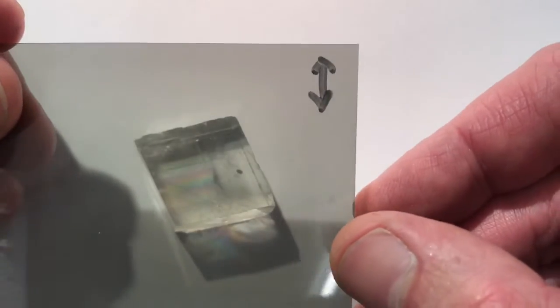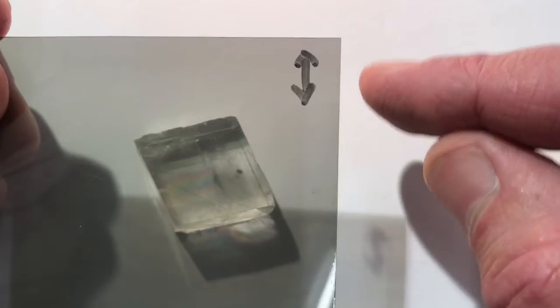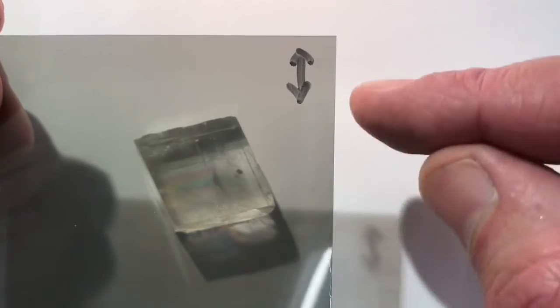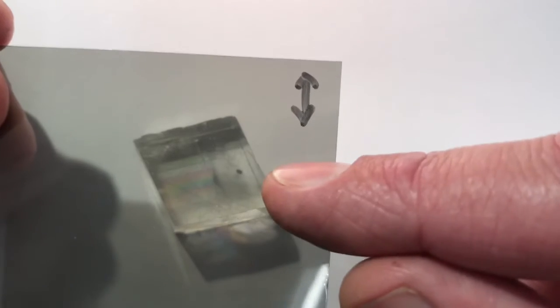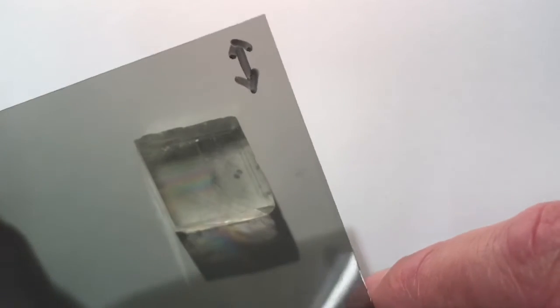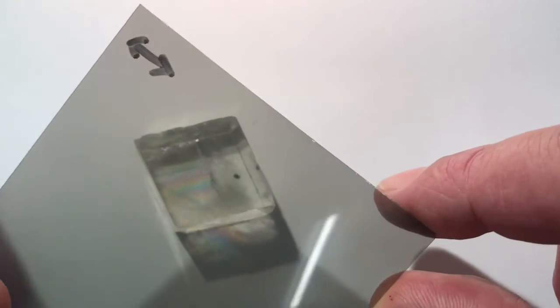So that tells me there's a linearly polarized field going this way that's that upper dot image, and if I rotate it to around right here then we're seeing the other one.